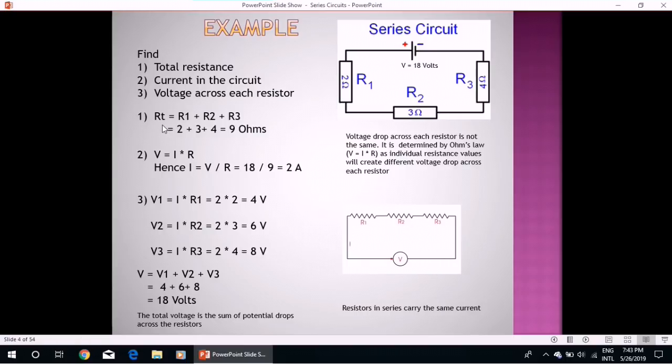So first of all, total resistance. As I have told in the previous slide, total resistance in a series circuit is equal to the sum of the resistances in the circuit. So R equals R1 plus R2 plus R3, and total comes out to be 2 plus 3 plus 4 equals 9 Ohms.